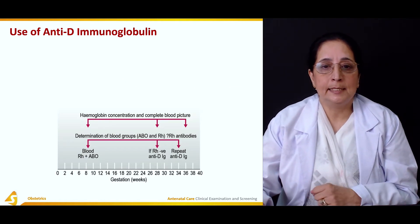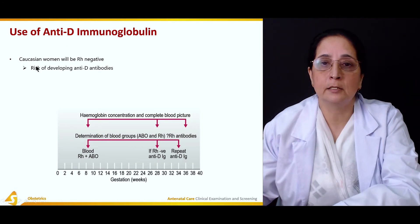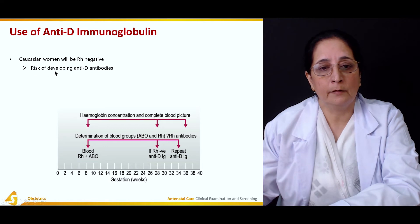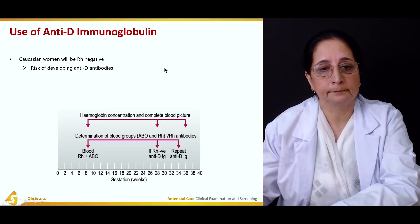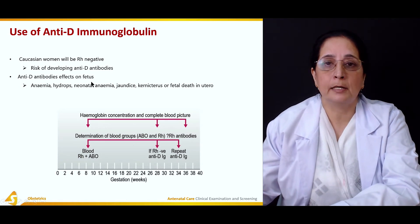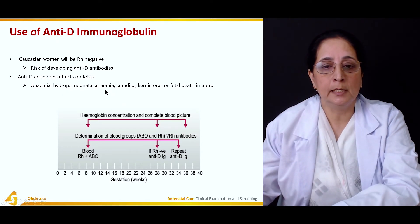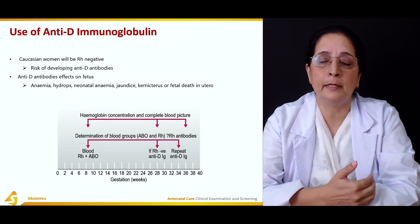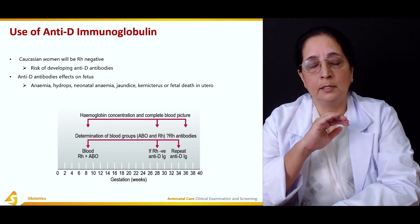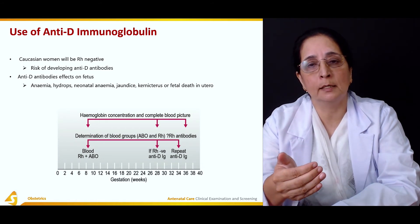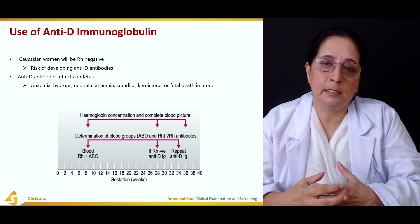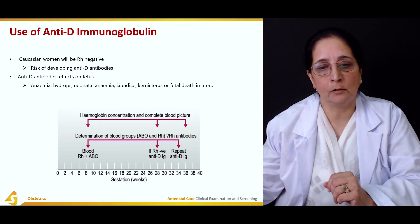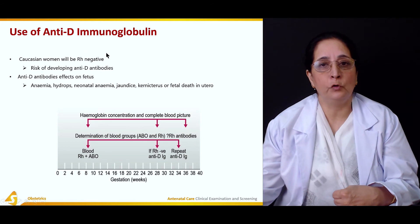Anti-D immunoglobulin is used when there is a risk of developing Rh or ABO incompatibilities. The effects of anti-D antibodies on the fetus include anemia, hydrops, neonatal anemia, jaundice, kernicterus, or fetal death — because antibodies cross the placenta and cause destruction of fetal blood. Anti-D immunoglobulin is important to prevent these complications.